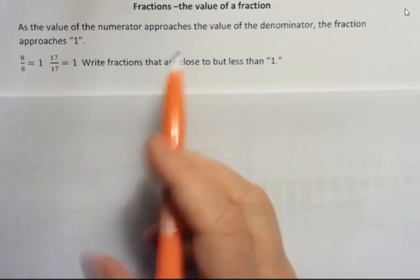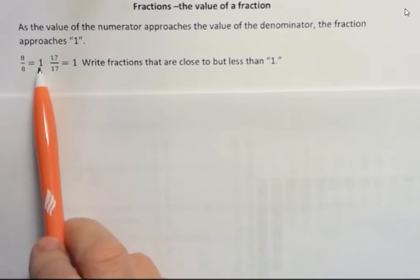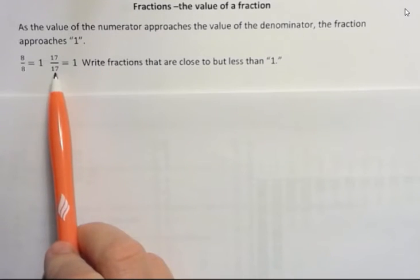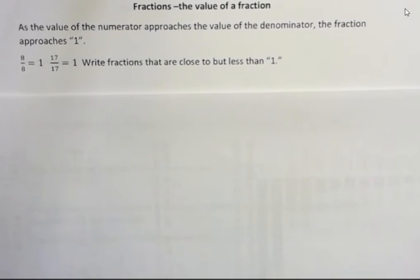As the value of the numerator approaches the value of the denominator, the fraction approaches 1. So 8 over 8 equals 1, and 17 over 17 equals 1. But what about fractions that are close to but less than 1?